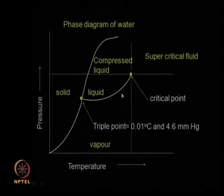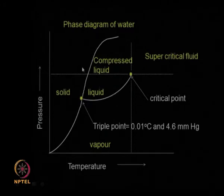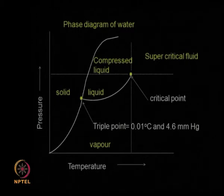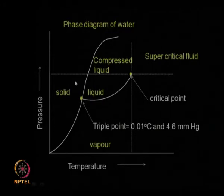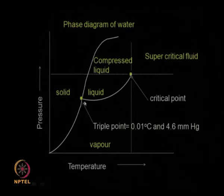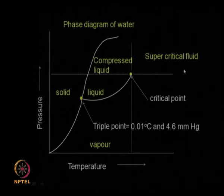If we are operating above the triple point, moving from solid to vapor requires passing through the liquid phase. But if you are operating below the triple point, you can move directly from solid to vapor or vapor to solid without going through the liquid at all. There is also a critical point where the liquid and vapor meet, and the region beyond it is called the supercritical fluid.